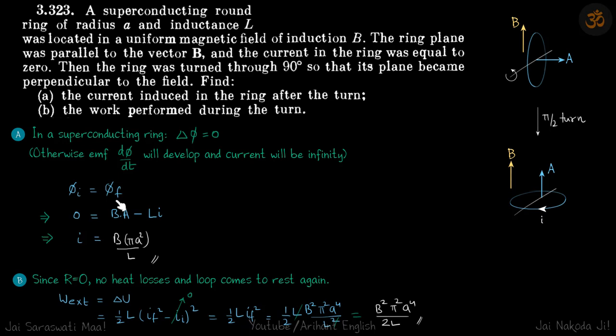So initial flux is equal to final flux. So initially B and A are perpendicular to each other. So B dot A zero, there is no current also. So flux initial is zero. Finally,